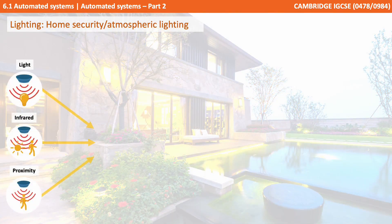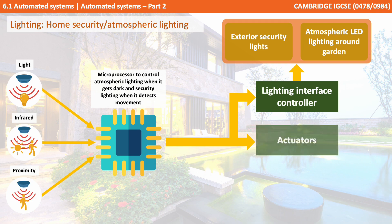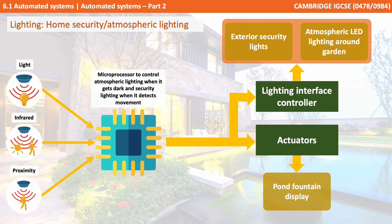Lighting in general is another area which has benefited massively from automation. A simple example is lights along roads or motorways which automatically turn on when it gets dark and turn off in the morning. Here we're looking at the example of a home security and atmospheric lighting system, where a number of sensors collect information. The microprocessor controls the atmospheric lighting when it gets dark, as well as security lighting when it detects movement.